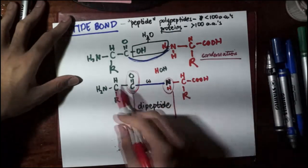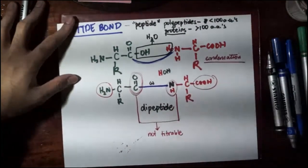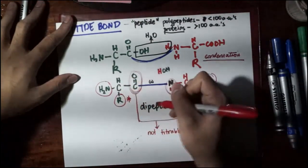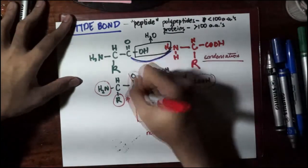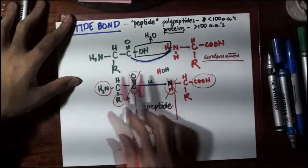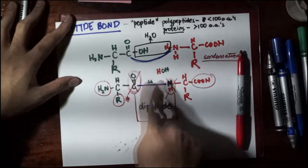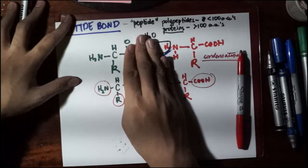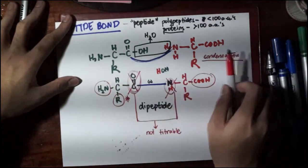The only titratable groups are the free amino and carboxyl groups at the terminals, plus any R group that belongs to one of the seven titratable amino acids. In a longer peptide, say 10 amino acids, all the carboxyls and aminos in the middle cannot be titratable anymore — we don't care about those. But there will always be a free amino group at the leftmost part and a free carboxyl at the rightmost part.